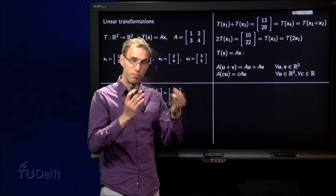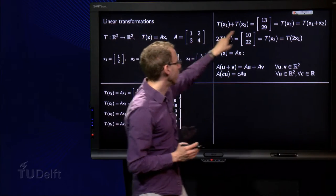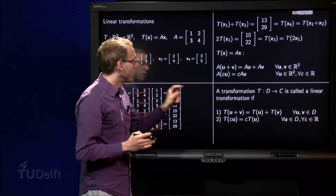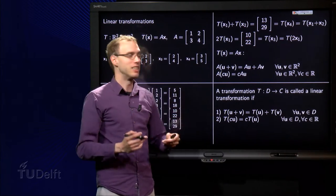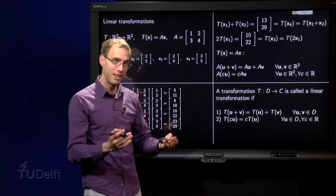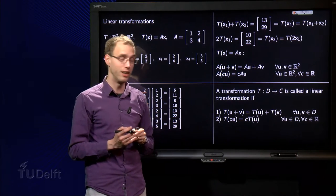For a transformation which is implemented by a matrix, this rule over here holds. Generalize this. A transformation T from the domain to the codomain is called a linear transformation if exactly these two rules over here hold.